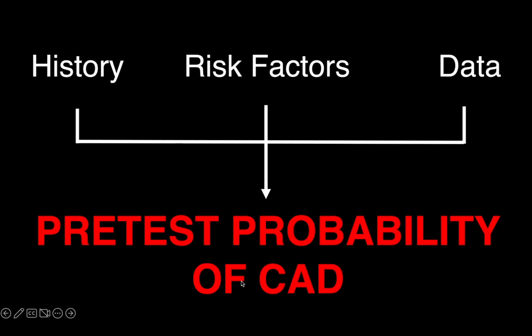When we're talking about history, risk factors, and data, what are we really trying to figure out? Whenever someone comes to us with chest pain, obviously there are a number of diagnoses that can cause it, but from a cardiologist's standpoint, what I'm trying to figure out is the patient's pre-test probability of coronary artery disease. Rather than using more antiquated scoring systems that give a general percentage, I want to give you a more granular approach using these three objective criteria.